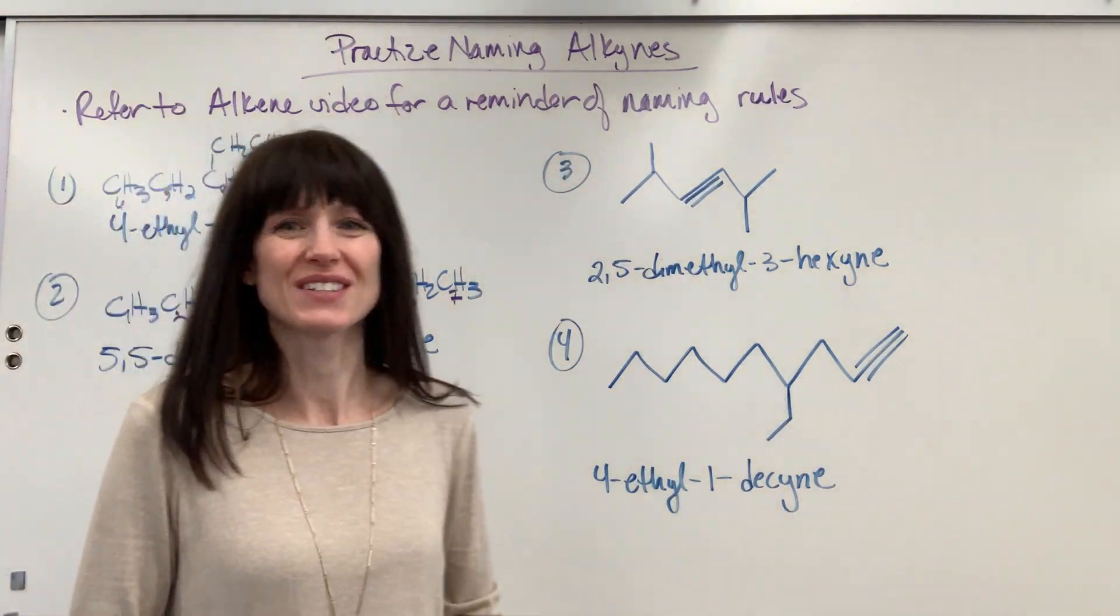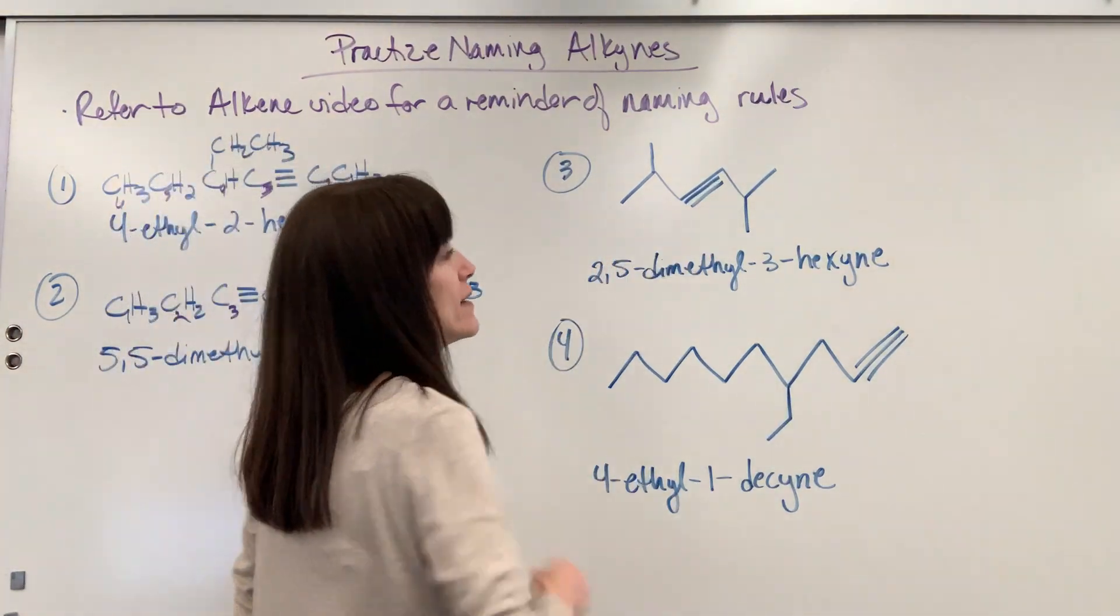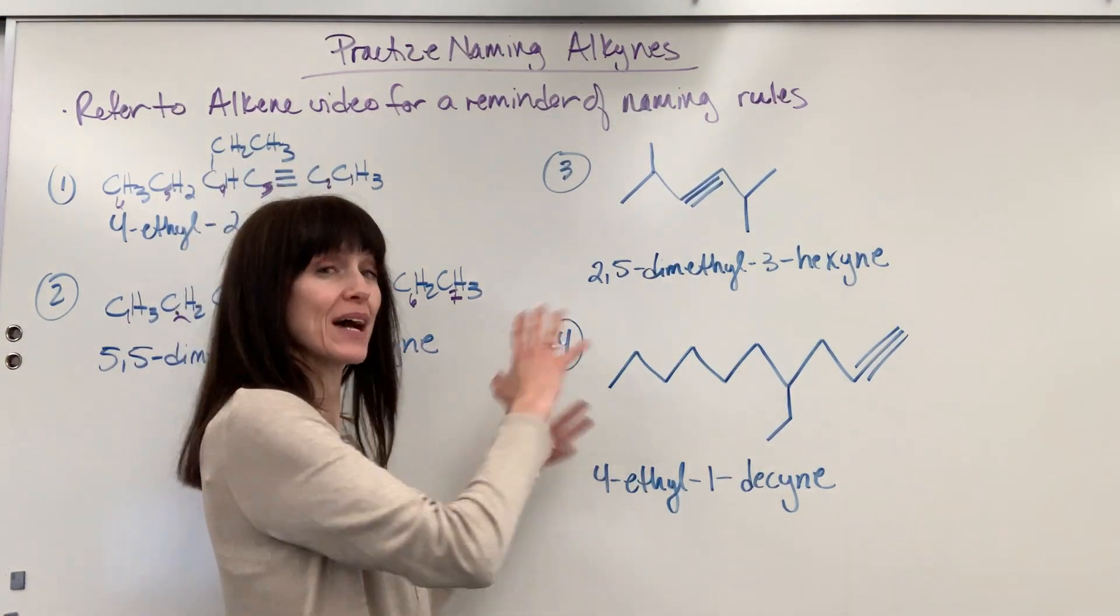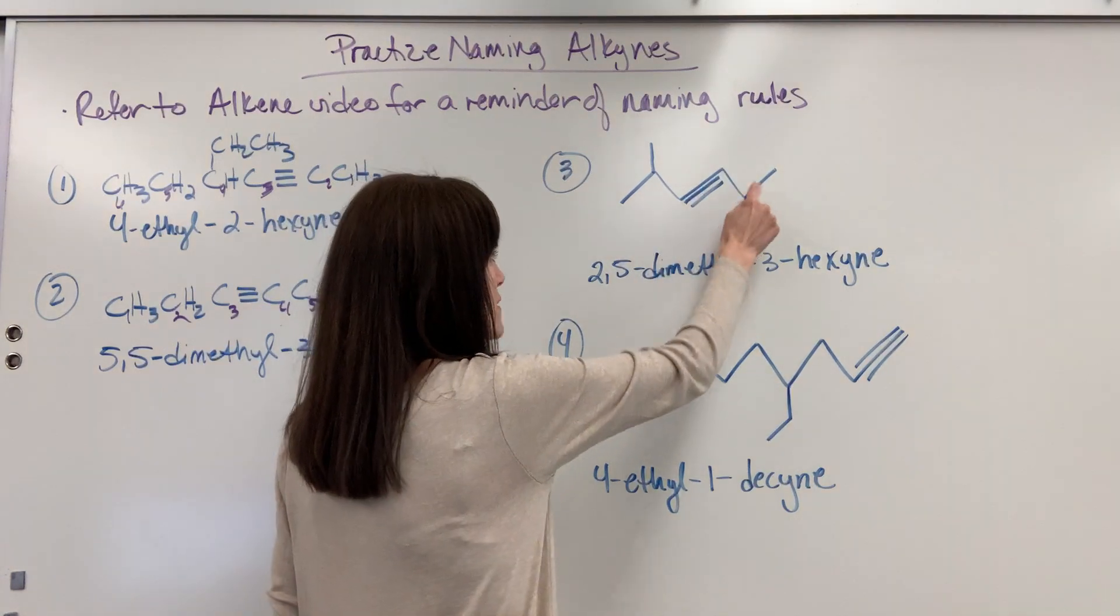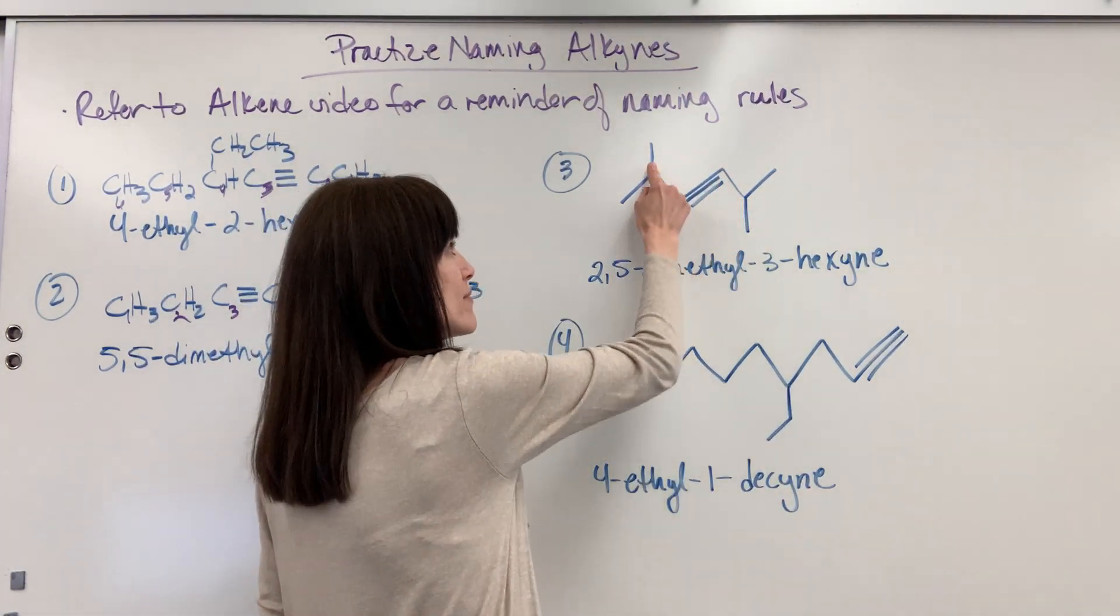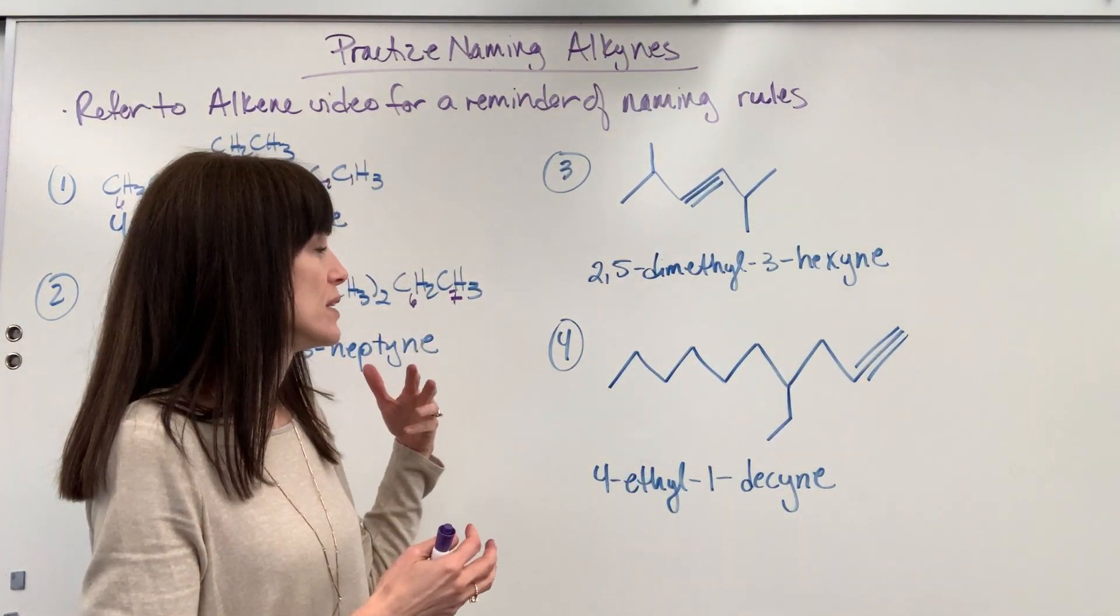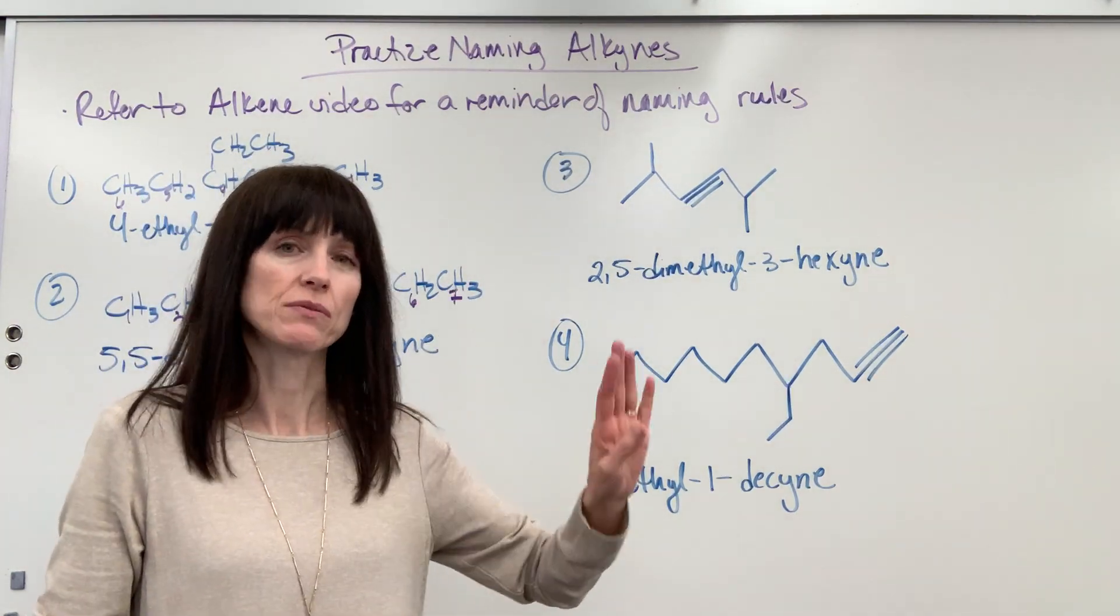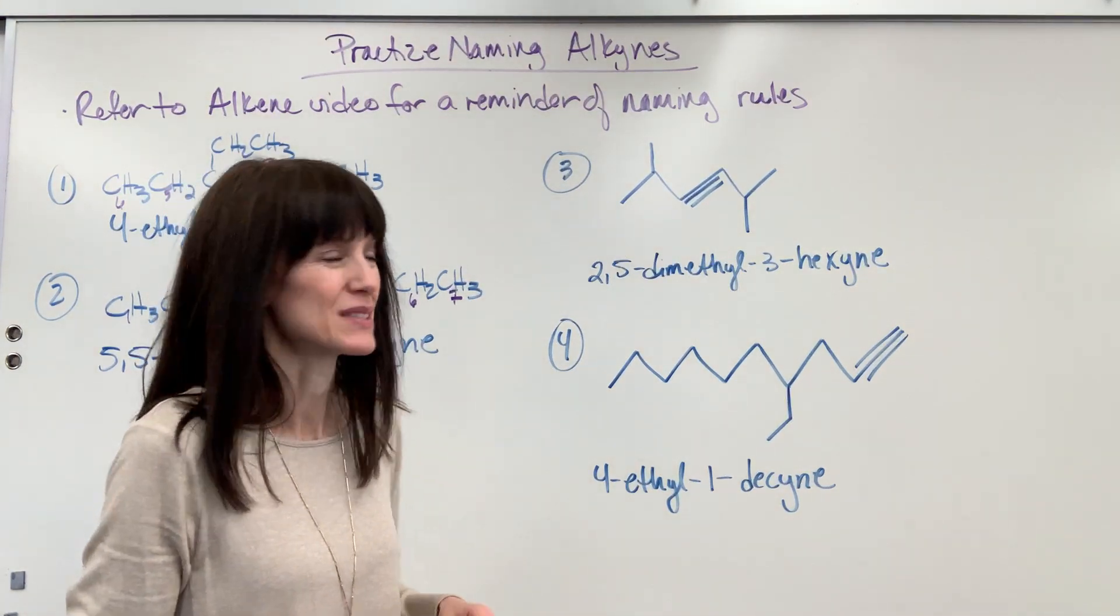Let's look at some skeletal structures and how we would decipher these and name these. I see my triple bond. We want to give it the smallest numbers possible. Let's check both left and right. So going from the left, one, two, three, four, five, six. Or let's check going from the right. One, two, three, four, five, six. Alright. So then the second thing I look at is since they're both going to have the three carbon, if I go from left to right or right to left, let's look at the substituents and give those the smallest numbers.